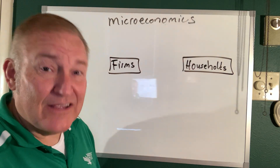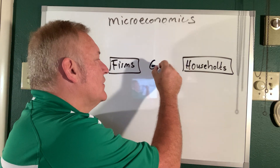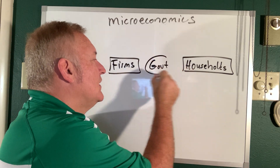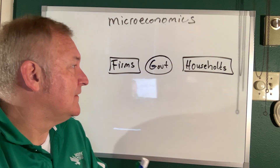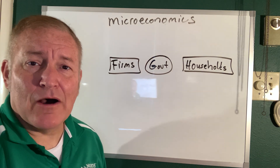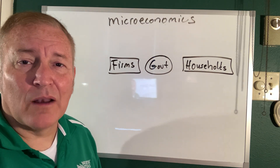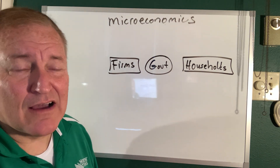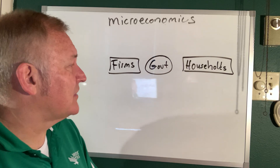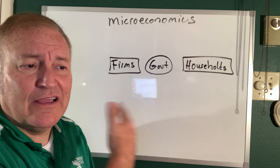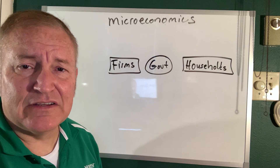The third entity is government. There you go — the U.S. economy, actually any economy, is just the interchange among those three entities.